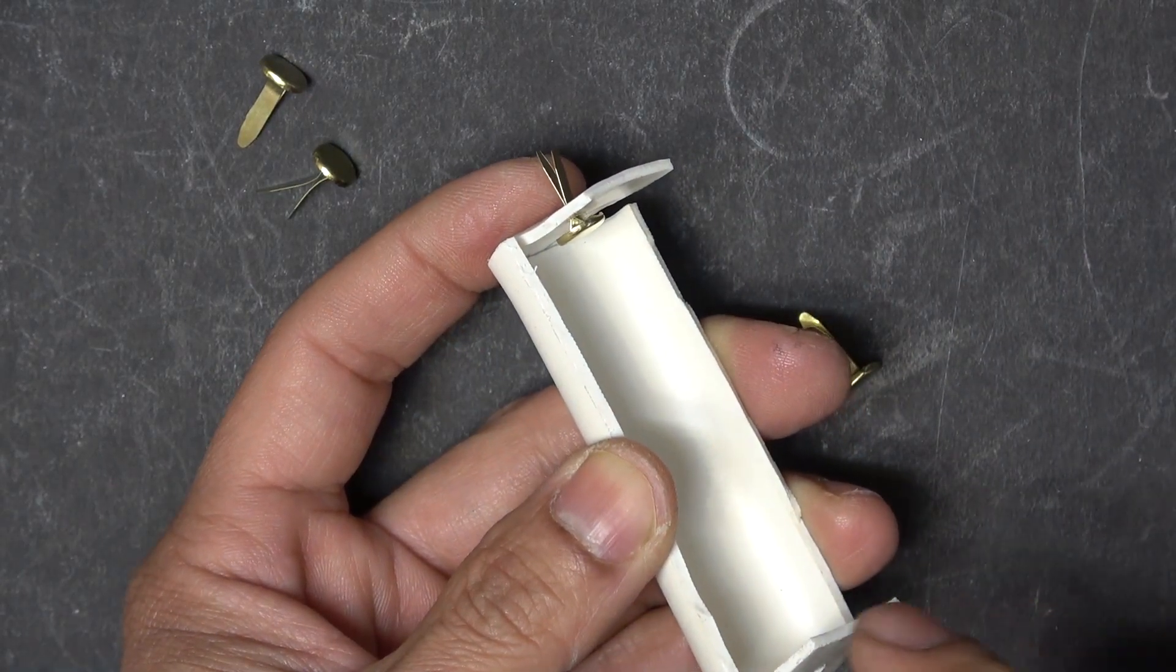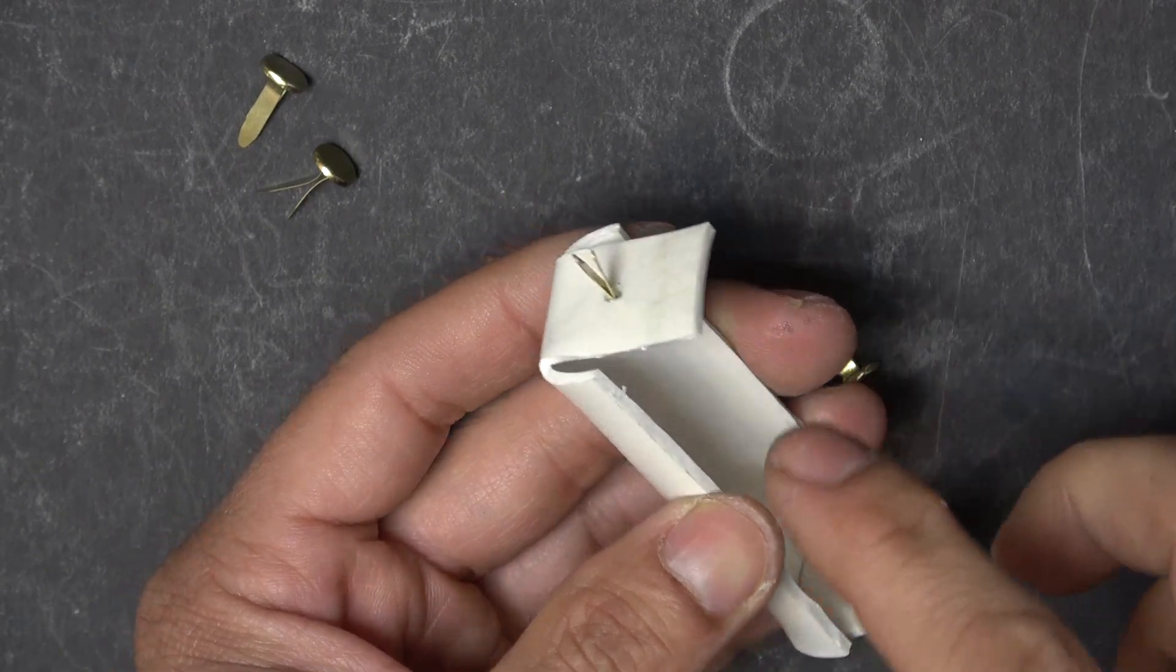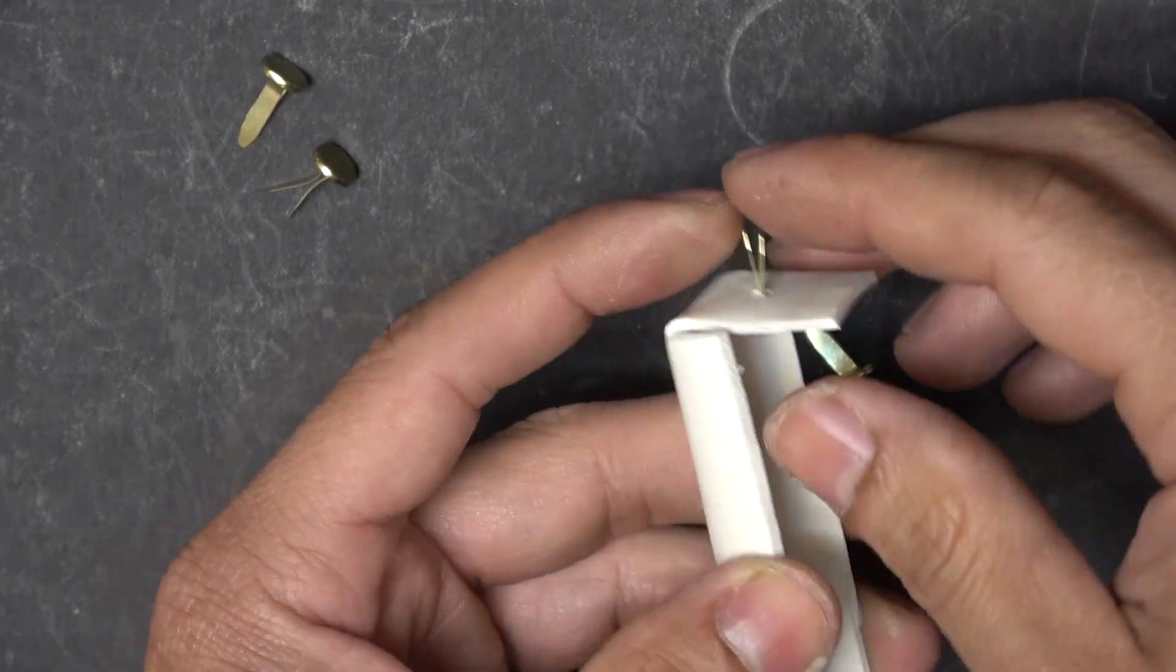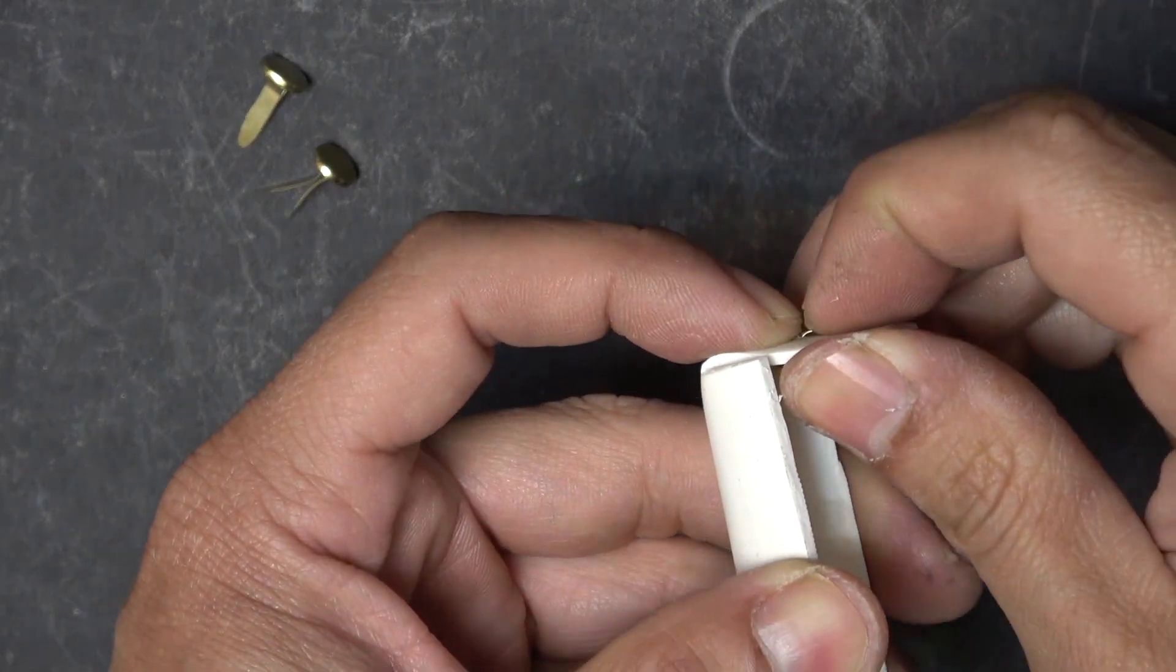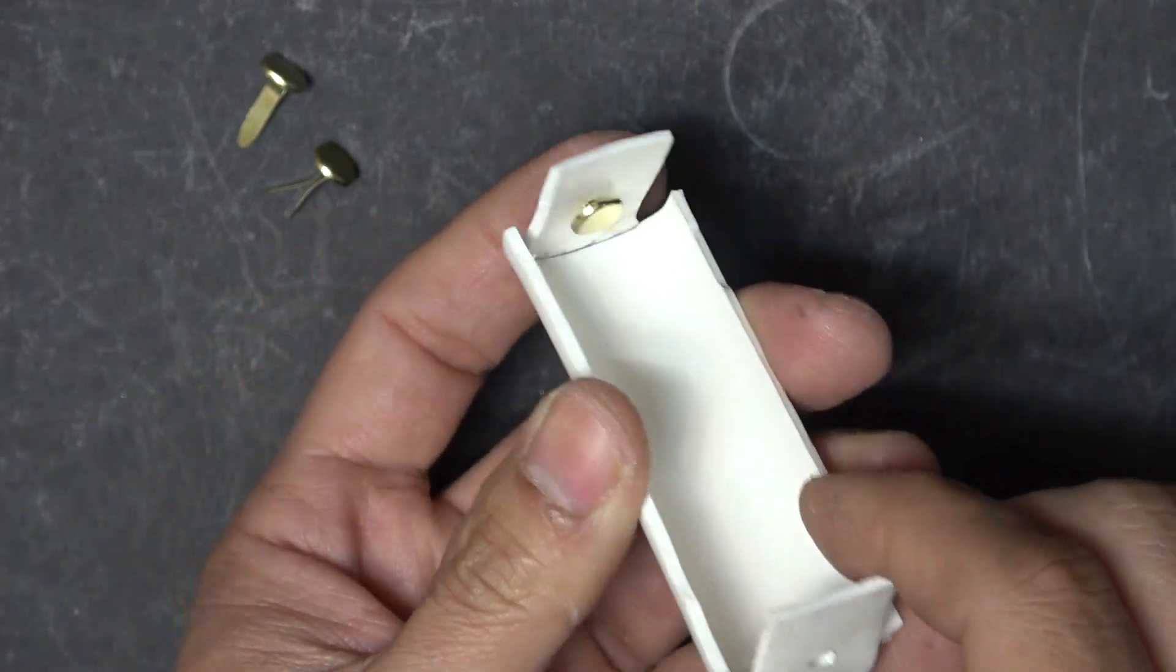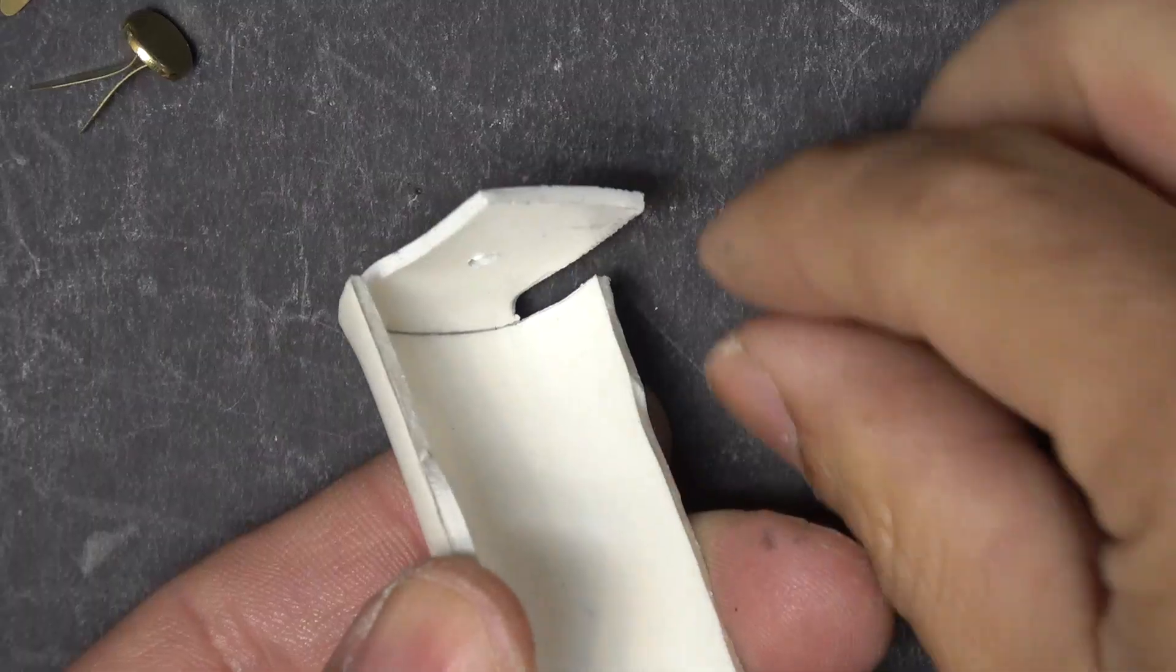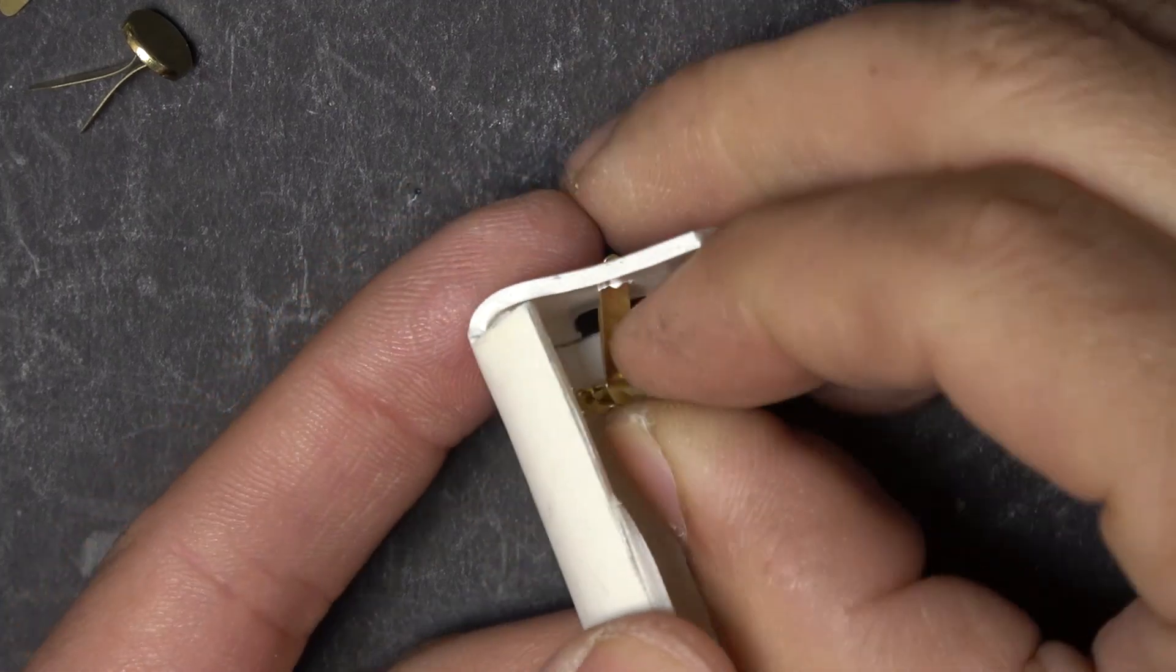This one is a bit tighter and it's better because it will retain the paper clip in place better. Then we do the same thing on the other side. Check that out, that is so easy.